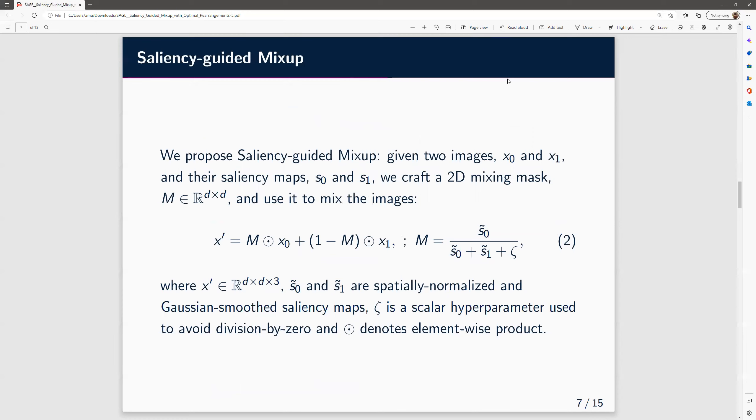We propose saliency-guided mix-up. Given two images, x_0 and x_1, and their saliency maps s_0 and s_1, we compute a 2D mask M and use it to mix the images. So M is the ratio between s_tilde_0 and the sum of s_tilde_0, s_tilde_1, and zeta. S_tilde are essentially spatially normalized and Gaussian-smoothed saliency maps.